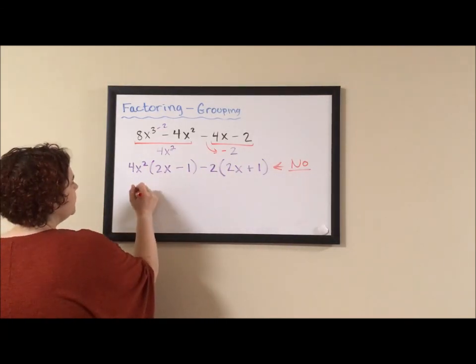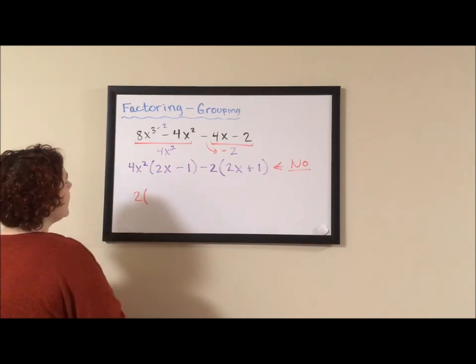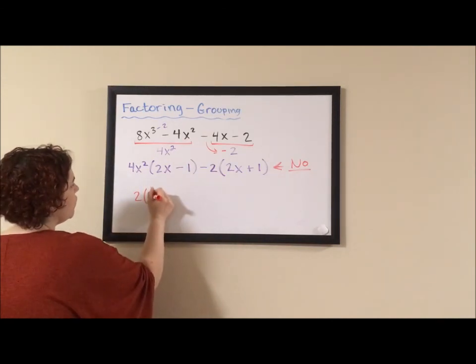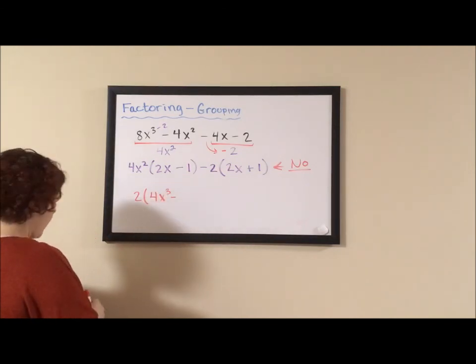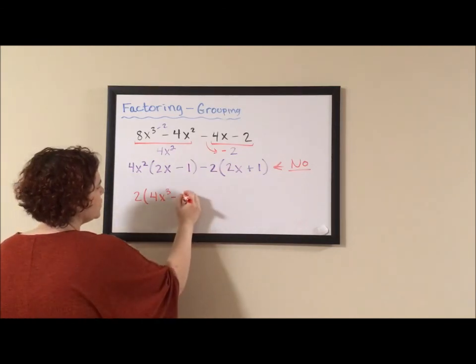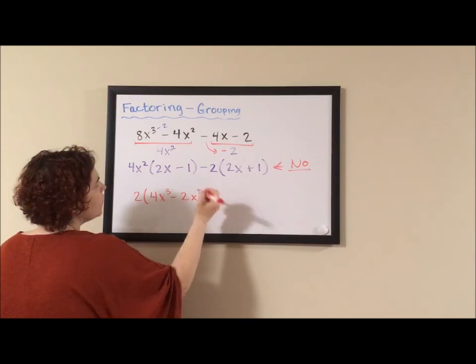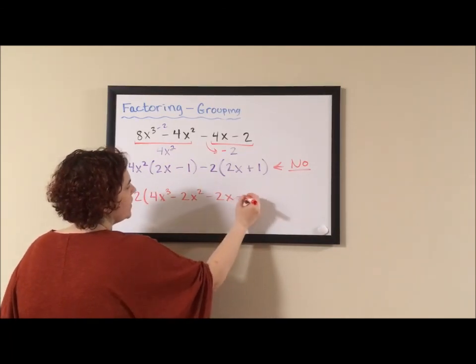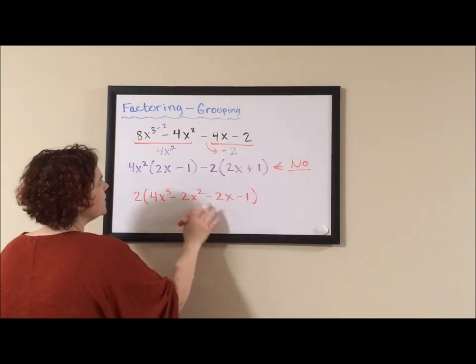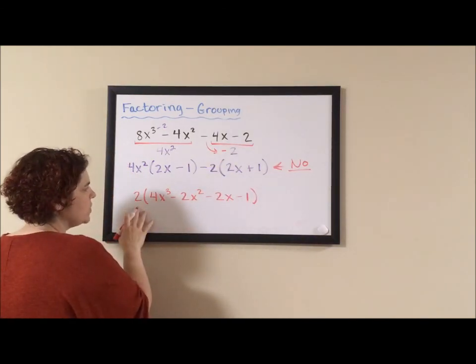When I pull out a 2, 8x cubed divided by 2 is 4x cubed, 4x squared divided by 2 is 2x squared, 4x divided by 2 is 2x and 2 divided by 2 is 1. I kept all the signs the same because I was pulling out a positive 2.